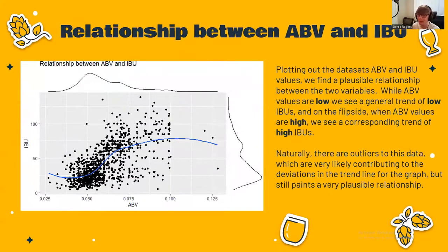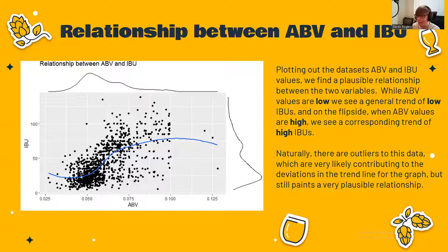There does seem to be a relationship between ABV and IBU given this chart — as ABV increases, IBU increases. This is a plausible correlation. But what's interesting is it looks like it levels off and maybe even goes down after about 10%. There are not a lot of beers with an ABV above 10%, so it'd be really interesting to get more data on those higher ABV beers.